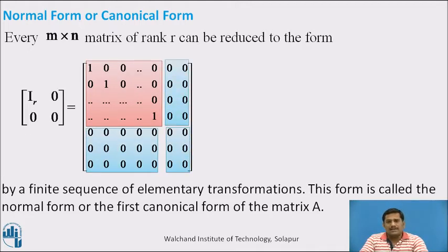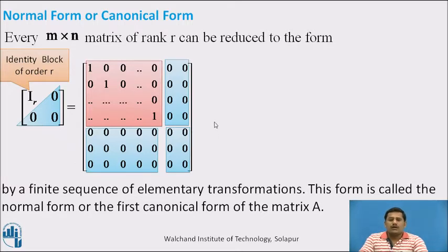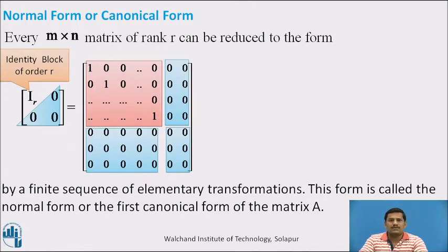This matrix in short can be denoted by the symbol I_R with zero blocks. I_R is the identity block of order r, and the three zeros are the zero blocks of various orders. So each and every matrix of rank R can always be reduced to such a form, and such a form is called the normal form or the canonical form.